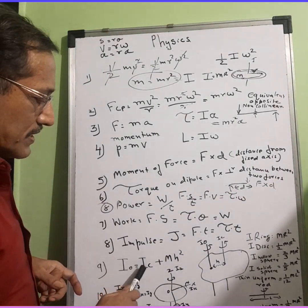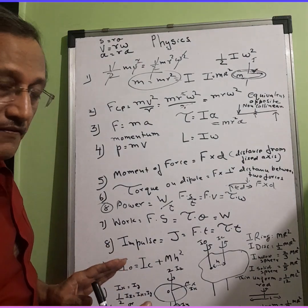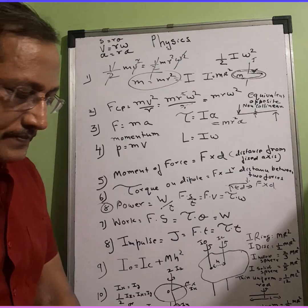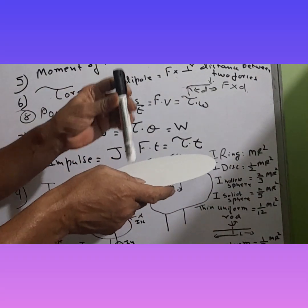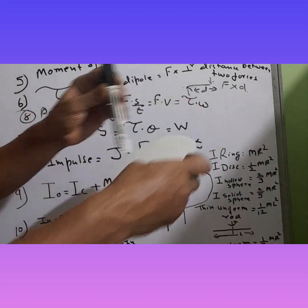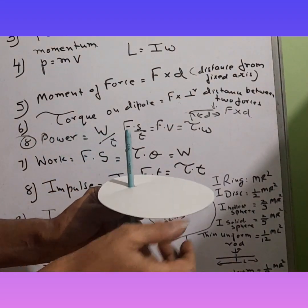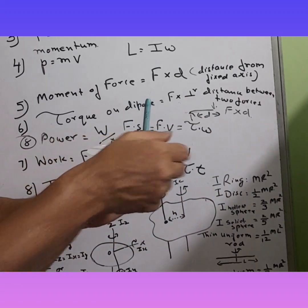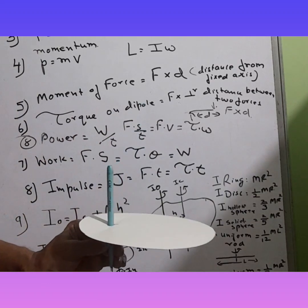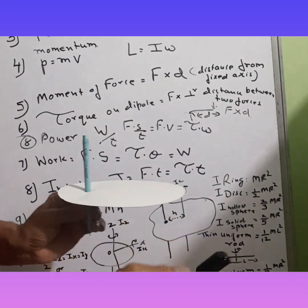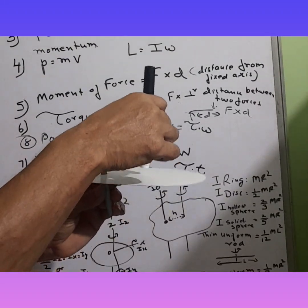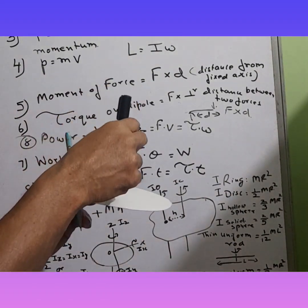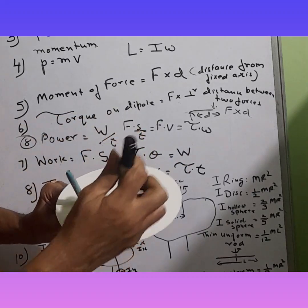We arrive at the formula: I₀ is equal to Ic plus mh squared. Now this we have got to derive, but before derivation, we need not wait to pick up the formulae. Suppose I am rotating a particular object — the point from where I am rotating it gives I₀. The center of the object gives Ic; the moment of inertia passing through the center of this object is Ic.